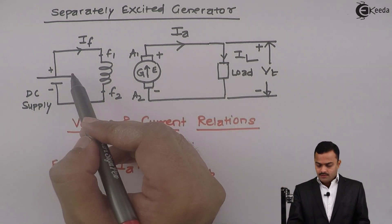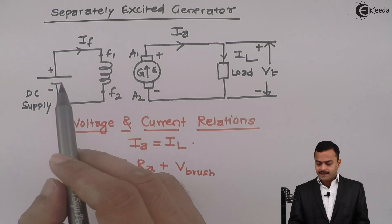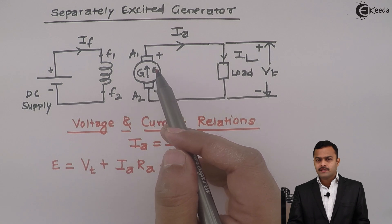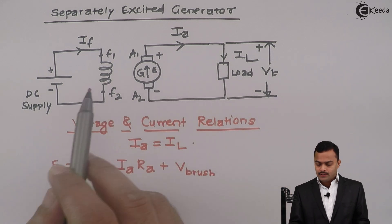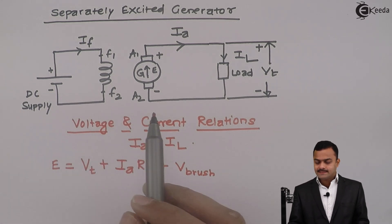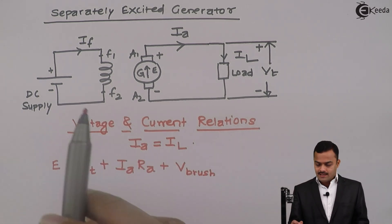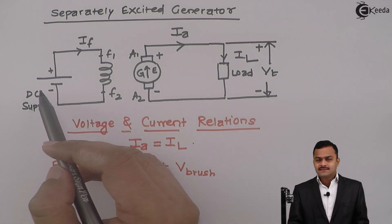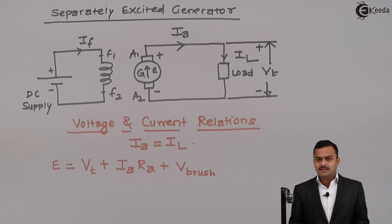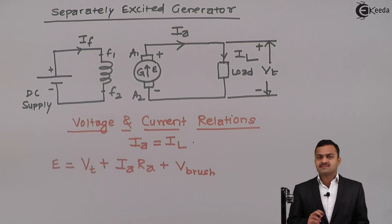This is the voltage equation of the separately excited generator. Here flux phi is independent of IA or whatever EMF got induced — it is purely dependent upon a separate DC supply. Hence it is called a separately excited generator. And if we fix this DC supply, flux phi will remain constant, so it is also called a constant flux generator.